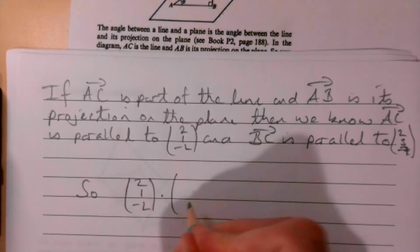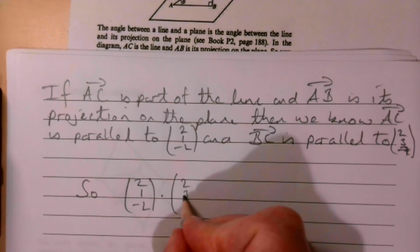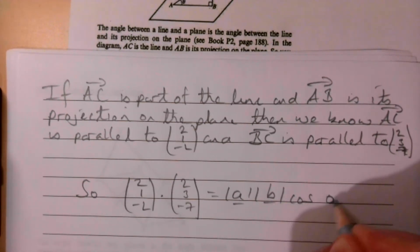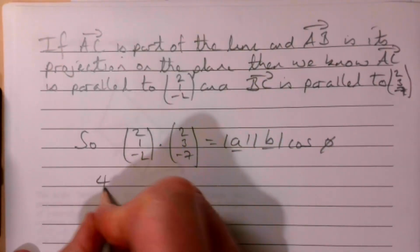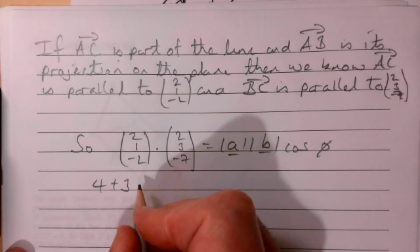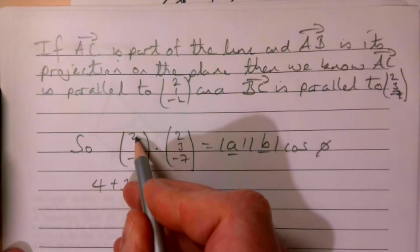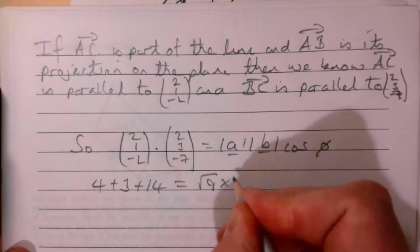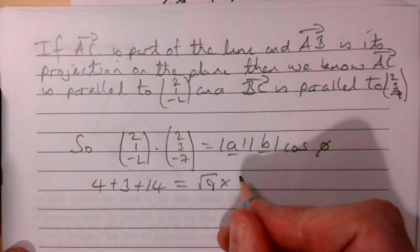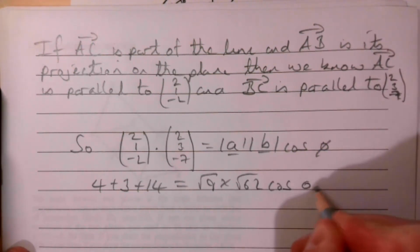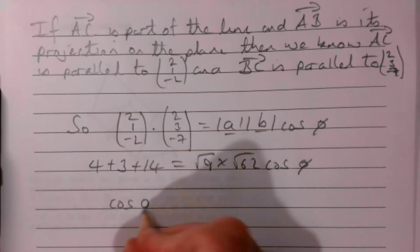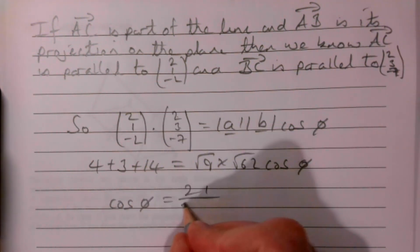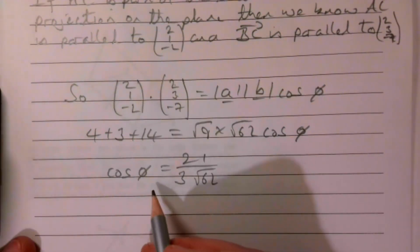Using the dot product formula: (2, 1, −2) · (2, 3, −7) = |b||n| cos phi. That gives 4 + 3 + 14 = 21. The magnitude of (2, 1, −2) is √(4+1+4) = √9 = 3, and the magnitude of (2, 3, −7) is √(4+9+49) = √62. So cos phi = 21 / (3√62).